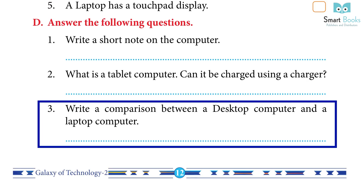Question 3: write a comparison between a desktop computer and a laptop computer. Answer — Desktop: a desktop is a type of computer that can be placed easily on a desk; it consists of a monitor attached with a keyboard, mouse, and CPU; it can also be referred to as a personal computer or PC. Laptop: a laptop is a type of computer that can be easily placed on a lap to work; the size of a laptop is much smaller than a desktop and it is highly portable.